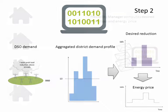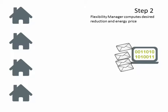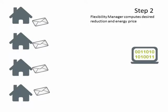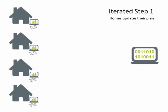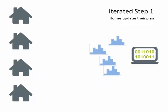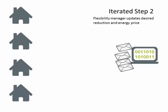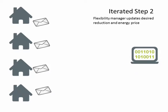These signals are then transmitted to the houses, which will iterate the first step, taking into account this new information, update the scheduling of their flexibilities, and send back an updated profile to the flexibility manager, which will in turn adapt its price signals. The procedure is iterated until it converges.